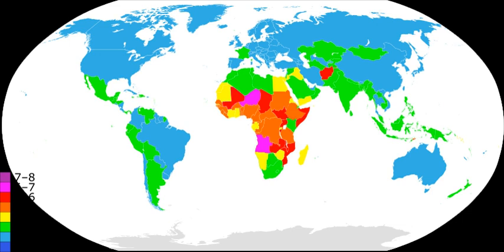Nobel laureate and head of the UN Millennium Project, Jeffrey Sachs, is also a strong proponent of decreasing the effects of overpopulation. In 2007, Jeffrey Sachs gave a number of lectures about population planning and overpopulation.